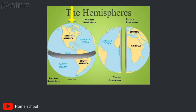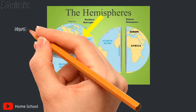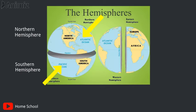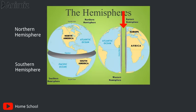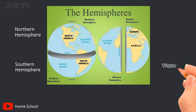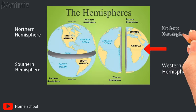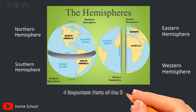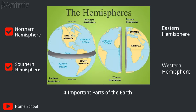This is the equator. This is the north pole and this is the south pole. When the equator divides the earth, we get the northern hemisphere and the southern hemisphere. At the top of the northern hemisphere is the north pole, while at the top of the southern hemisphere is the south pole. In the same way, this line is the prime meridian. When the prime meridian divides the earth, we get the western hemisphere and the eastern hemisphere. Thus, we got the four important parts of the earth: the northern hemisphere, the southern hemisphere, the western hemisphere, and the eastern hemisphere.